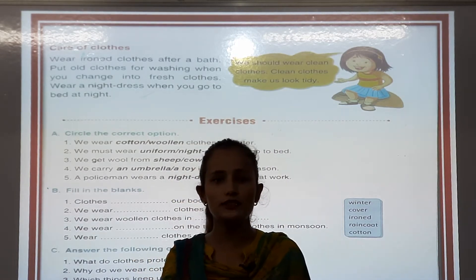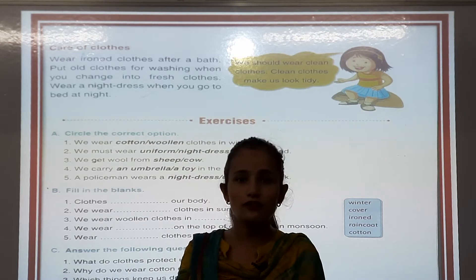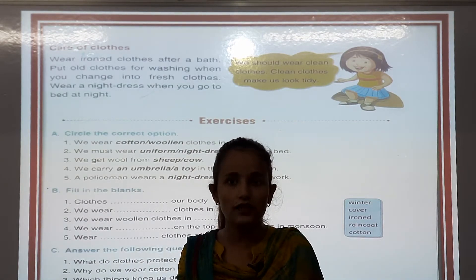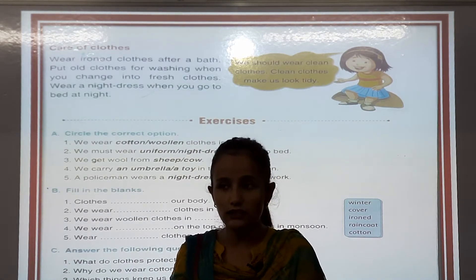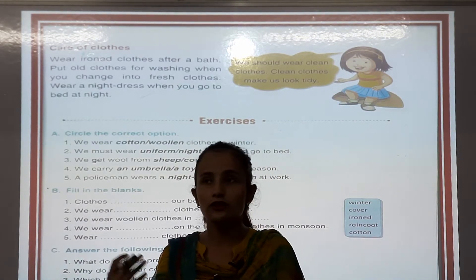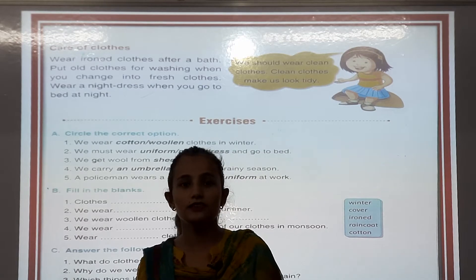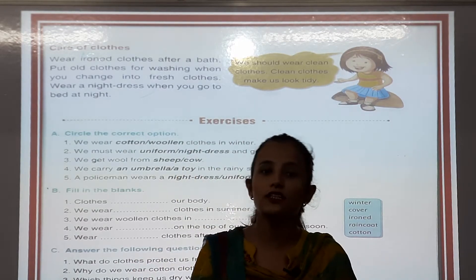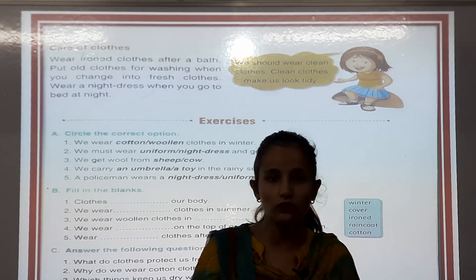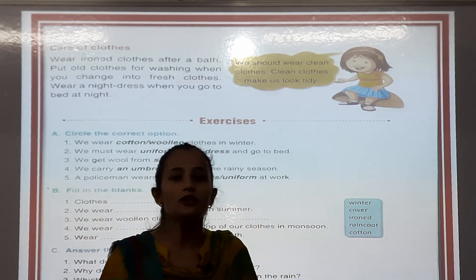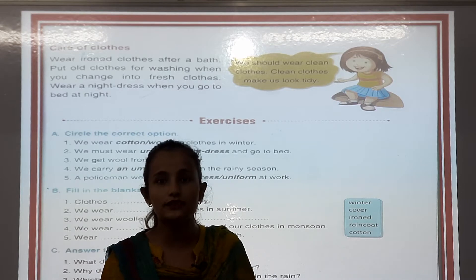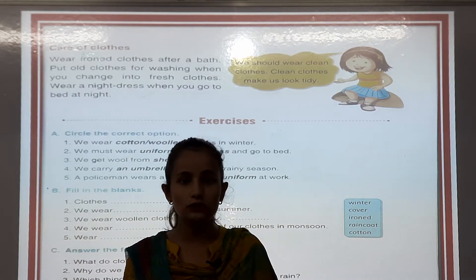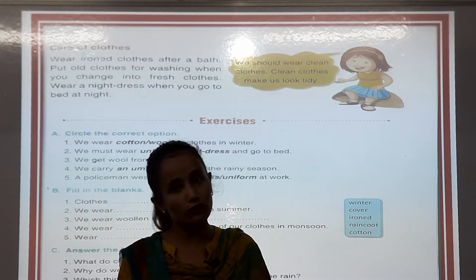There are different dresses in different seasons. Summary: in summer season — cotton clothes; in winter season — woolen clothes; and in monsoon season — raincoat and gum boots.